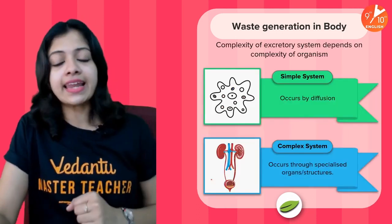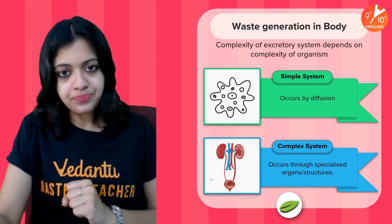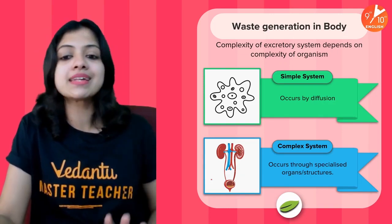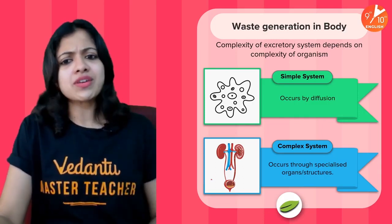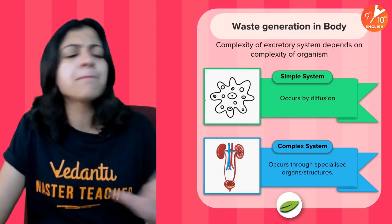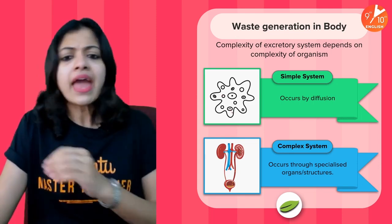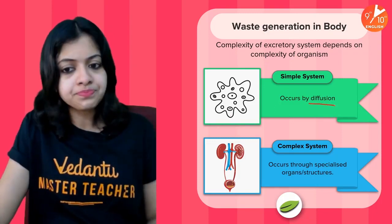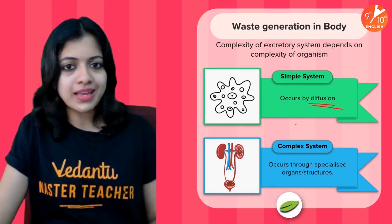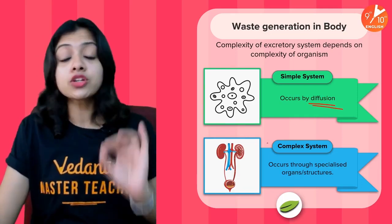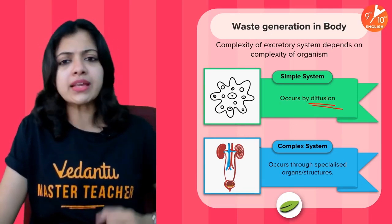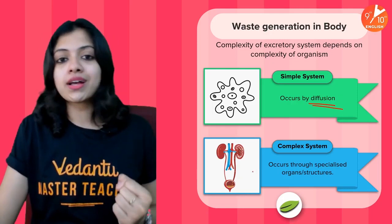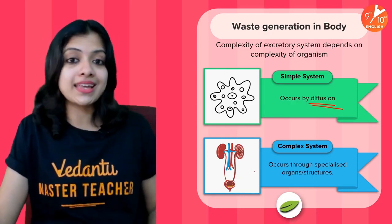The complexity of excretory systems depends upon the complexity of the organism itself. For example, in an organism as simple as amoeba, the excretory system is very simple. It is a unicellular organism and does not have any specialized organs, so elimination of waste matter happens through simple diffusion. Whereas in complex organisms like human beings, plants and animals, excretion occurs through specialized organs or structures.